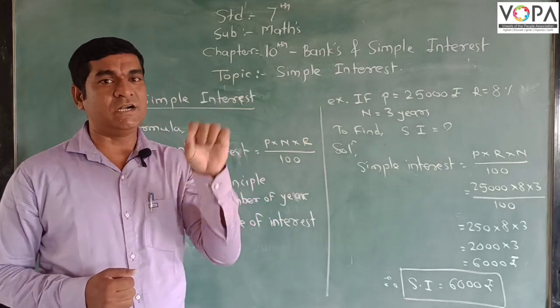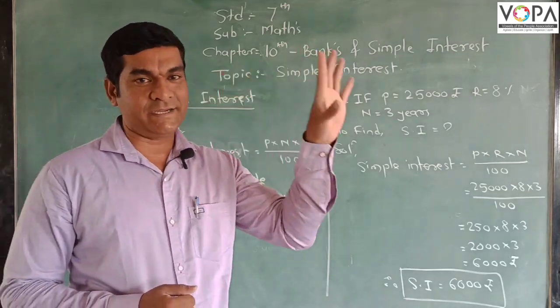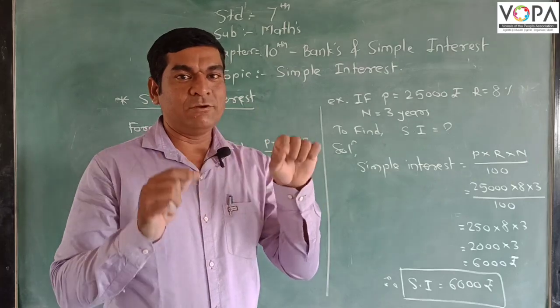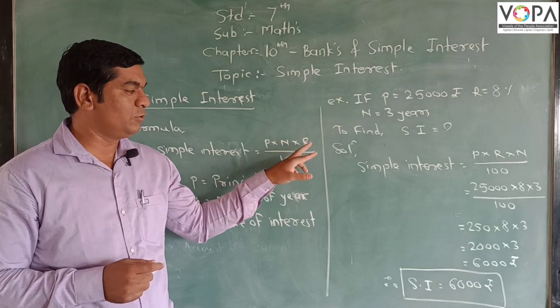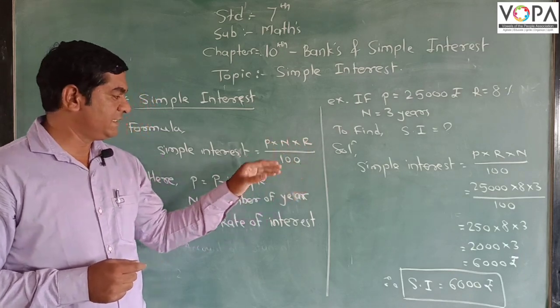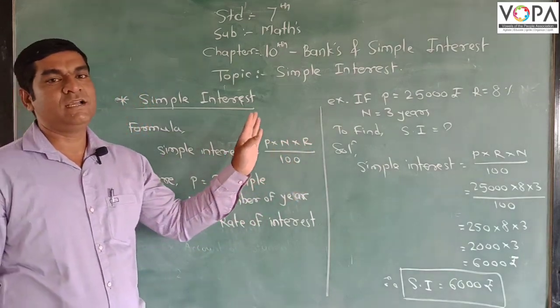P N R is a word related to the railway ticket. Always remember this. Whenever we come to the ticket, P N R is the word. So from this, P into A into R upon 100, it is a very simple formula to find Simple Interest.